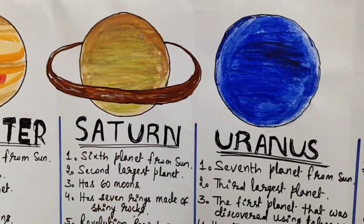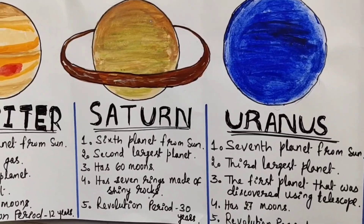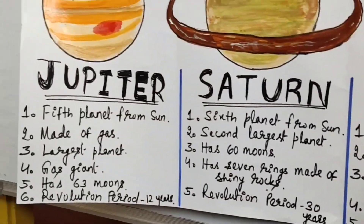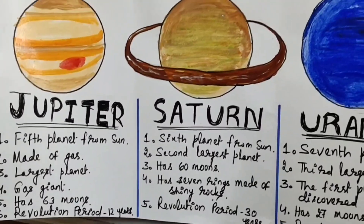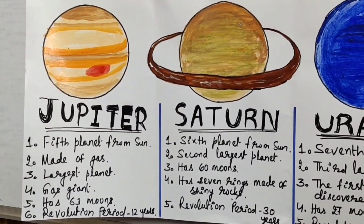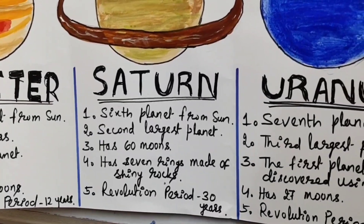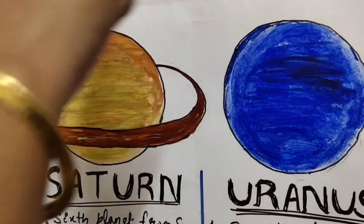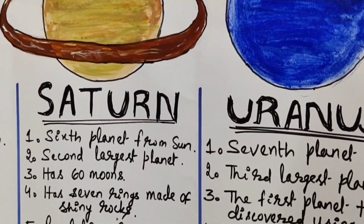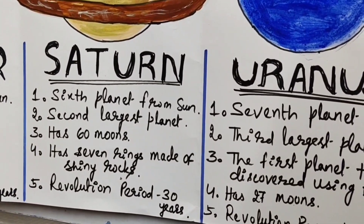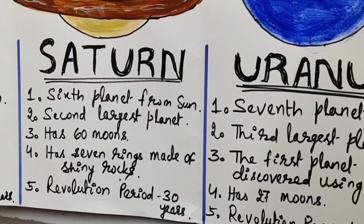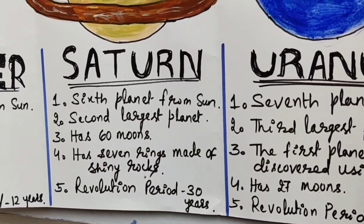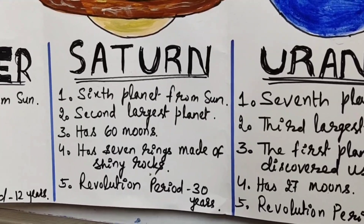Next is Saturn. Saturn is the sixth planet from the sun and the second largest planet. It has 70 moons and 7 rings made up of shiny rocks. Its revolution period is 30 years. The revolution period increases according to the distance of the planet from the sun.